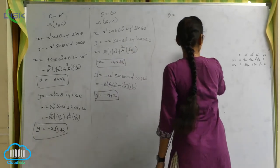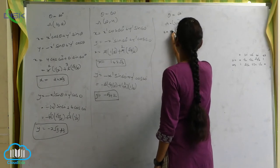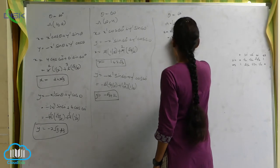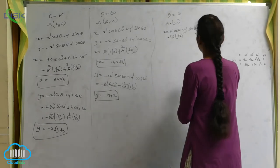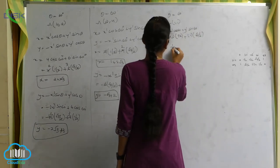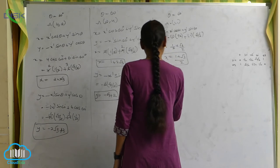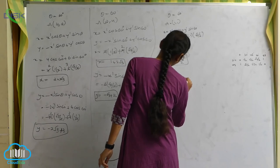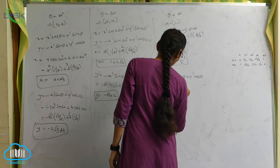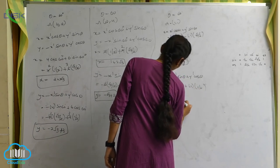Theta equals to 60, A equals to 1 comma 1. x equals to x dash cos 60 plus y dash sin 60. x dash means 1, cos 60 means 1 by 2, plus y dash means 1, sin 60 means root 3 by 2. So x equals to 1 by 2 plus root 3 by 2. y equals to minus x dash sin theta plus y dash cos theta. Minus x equals minus 1, sin 60 degrees equals root 3 by 2, plus 1 into 1 by 2. y equals minus root 3 plus 1 by 2.